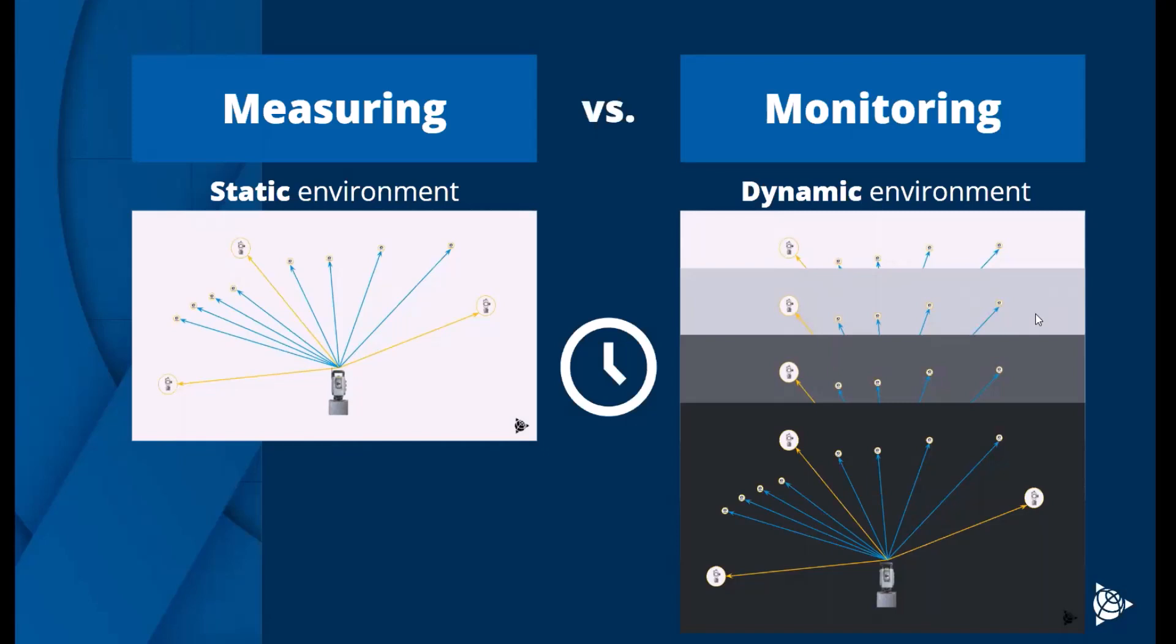The thing we're measuring is often going through some sort of change too, whether it's a structure changing temperature, a landslide, a bridge, a roadway, a railway, whatever it is. We're monitoring it because we expect it to be moving or hope that it's not moving and want to make sure. We're monitoring in a dynamic environment, and because we're doing these different rounds of measurements, things are going to be changing constantly.